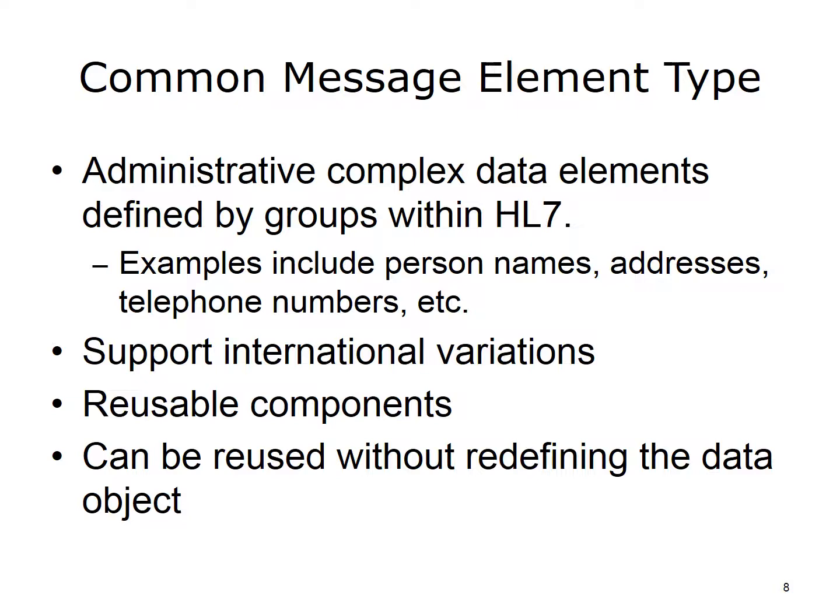Common message element types, CMATs, were originally meant to be administrative objects defined by groups within HL7. The first CMATs were simple and obvious constructs, such as person name, address, telephone numbers, email addresses, etc. Different CMATs could accommodate the differences in naming structure internationally and deal with such issues as surname versus family name versus last name. It permits building prefixes and suffixes into the name structure in a manageable way. As the power of CMATs was appreciated, the group defining CMATs expanded both the scope and the dimension of CMATs. There is a fine line between CMATs and templates. A CMAT may contain other CMATs. CMATs are reusable without redefining the data object.